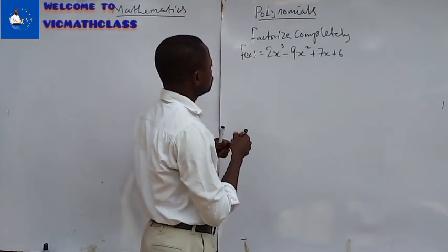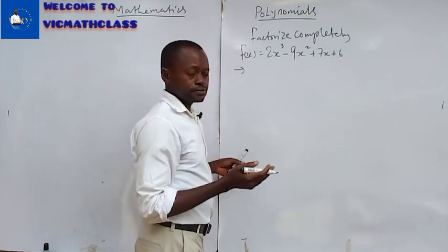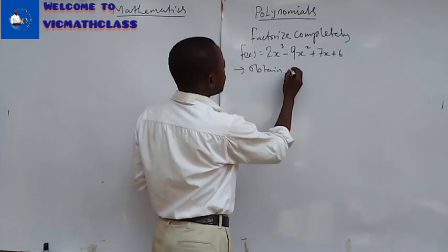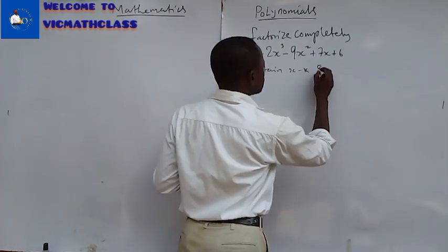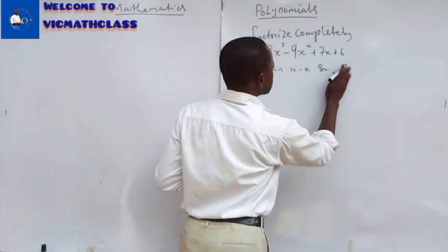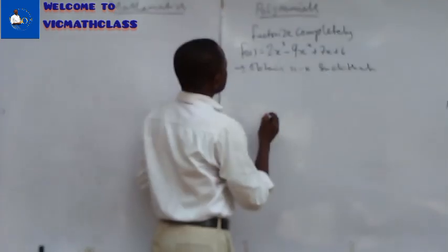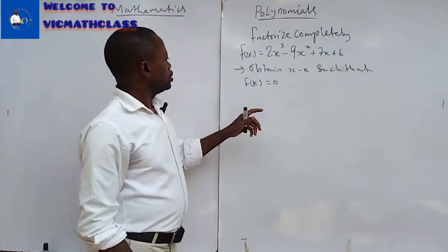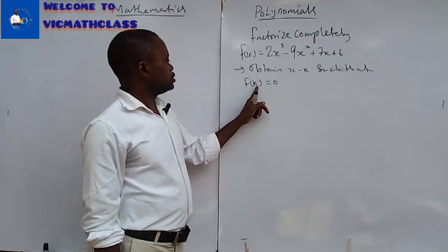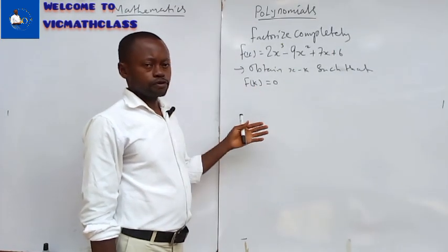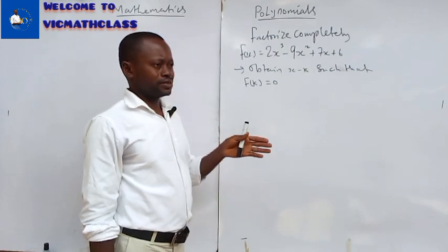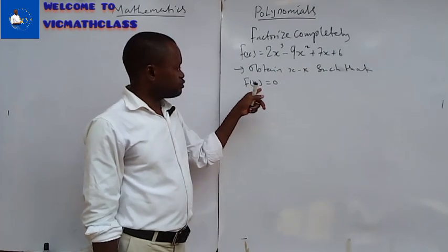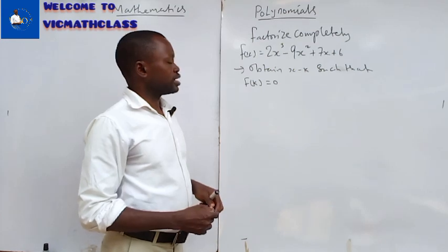The first step is to obtain x minus k such that f(k) is equal to zero. I will begin to test k values, and I'll keep on testing until I get an f(k) that is zero. Let's try and see what we are talking about here.